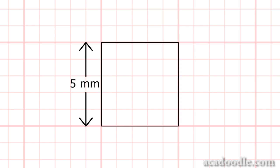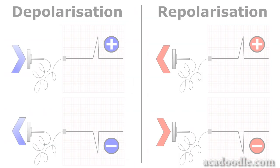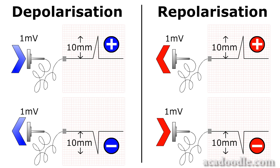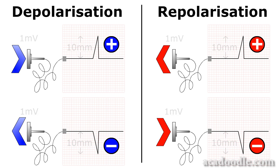ECG paper is divided into large squares of 5 mm in height and width and small squares of 1 mm in height and width. In a standard 12-lead ECG, the sensitivity of the machine is set at a level such that 1 mV of these electrical forces moving directly towards or away from a lead produces a deflection of 10 mm — that is 10 small squares — in the readout from that lead. As the depolarisation and repolarisation waves spread through the normal heart in a well-defined and relatively constant pattern, these rules mean that if we know the perspective of an ECG lead on electrical events in the heart, we can predict the form of readout it records.